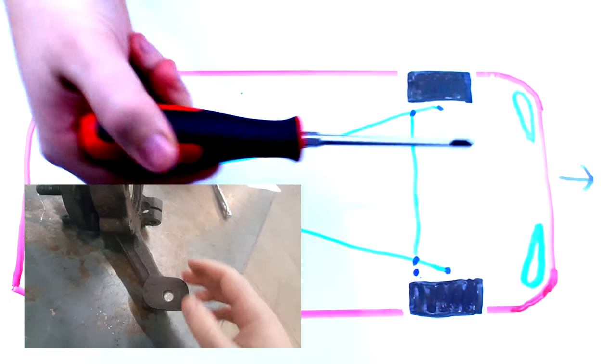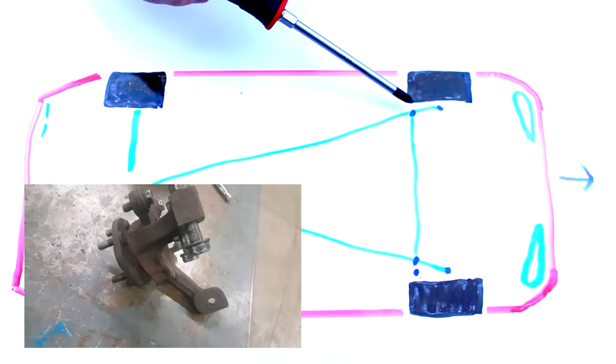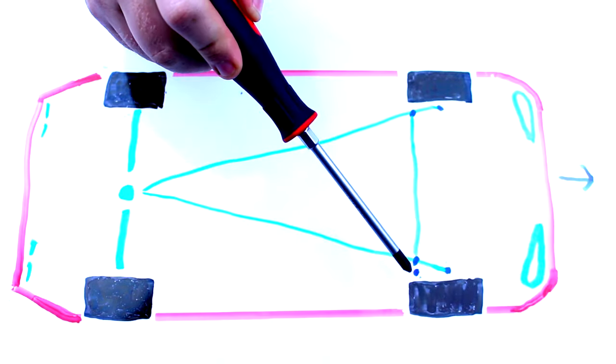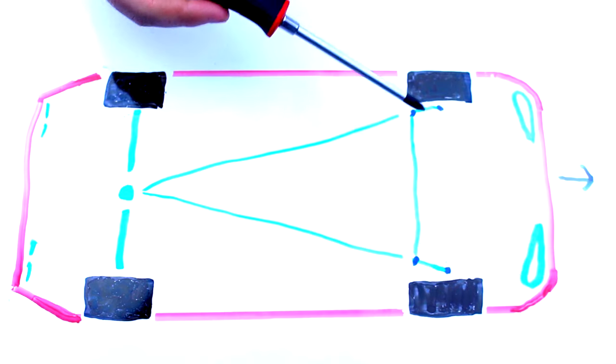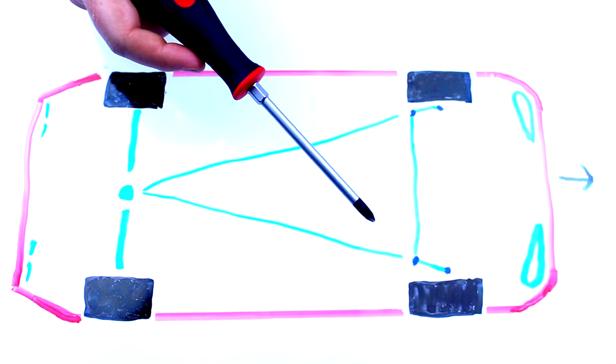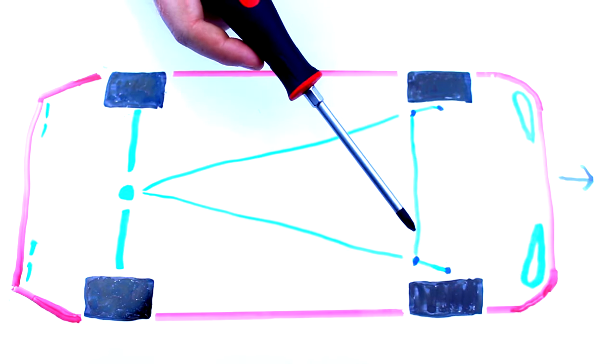Because of this angle if we were to turn this way this would pull on this wheel faster than it would push on this wheel. Just that angle alone will make it so whenever you turn a corner the inside wheel is going to be pulled at a steeper angle than the outside wheel.